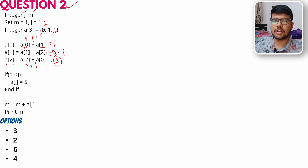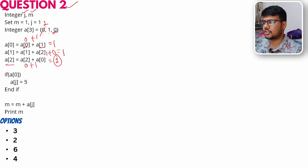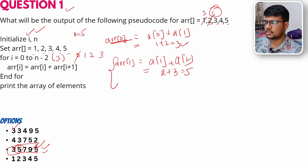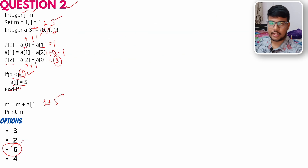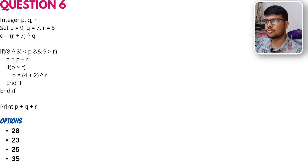If you overlook these details, your answer will be wrong — and the options are set up so that if you lose a plus-one or minus-one somewhere, you'll find that wrong answer among the choices. Array[0] is 1, so the condition is true. Array[j] (j=1) becomes 5, and m = 1 + 5 = 6. The correct answer is 6.